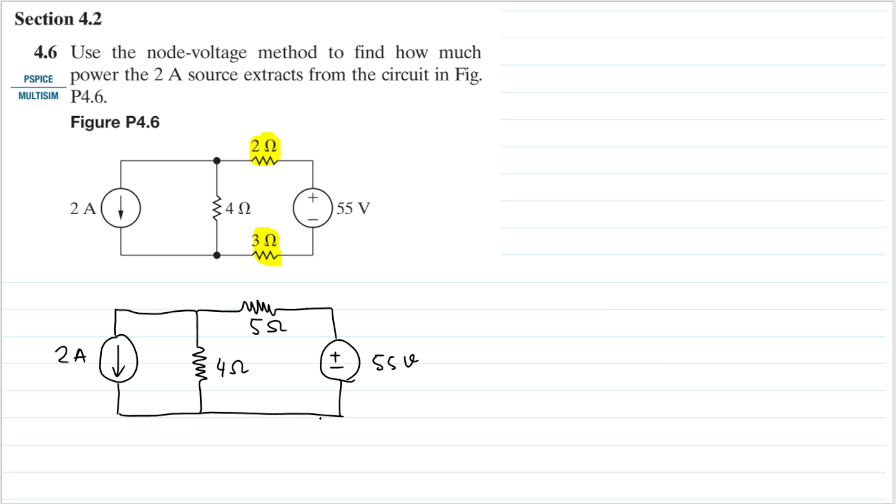We are asked to use the node voltage method, so this is our node here. Let's name this as node A, and this node here as our ground. Because this is our ground, the voltage here will be zero.